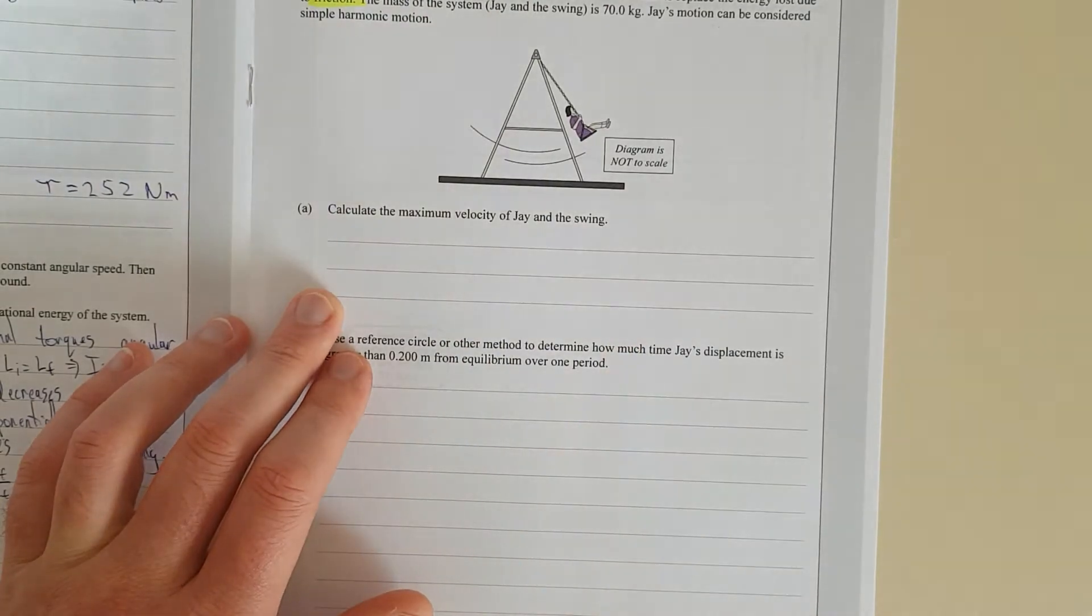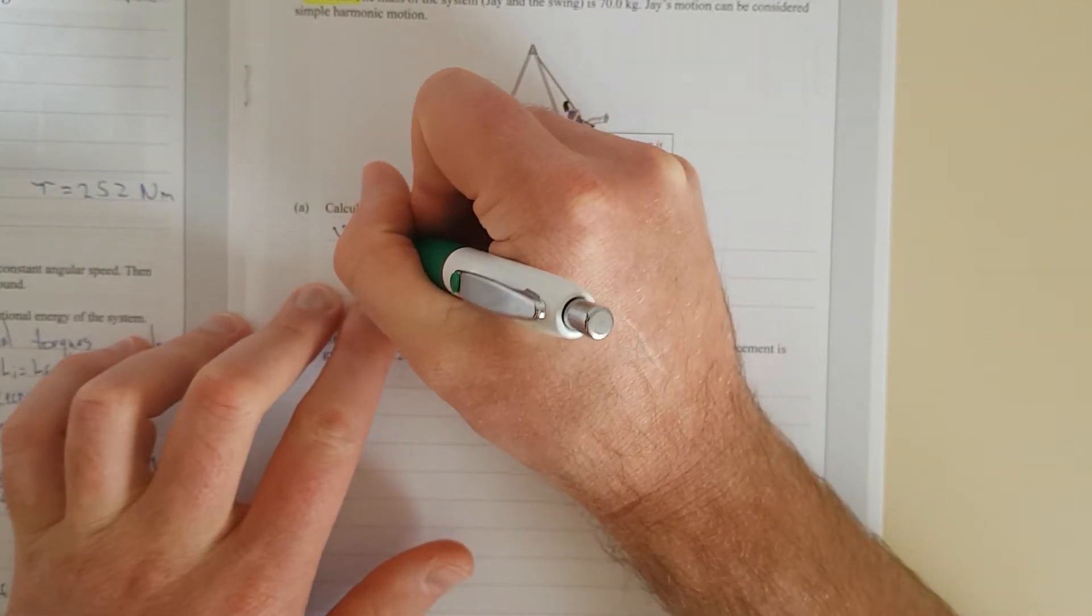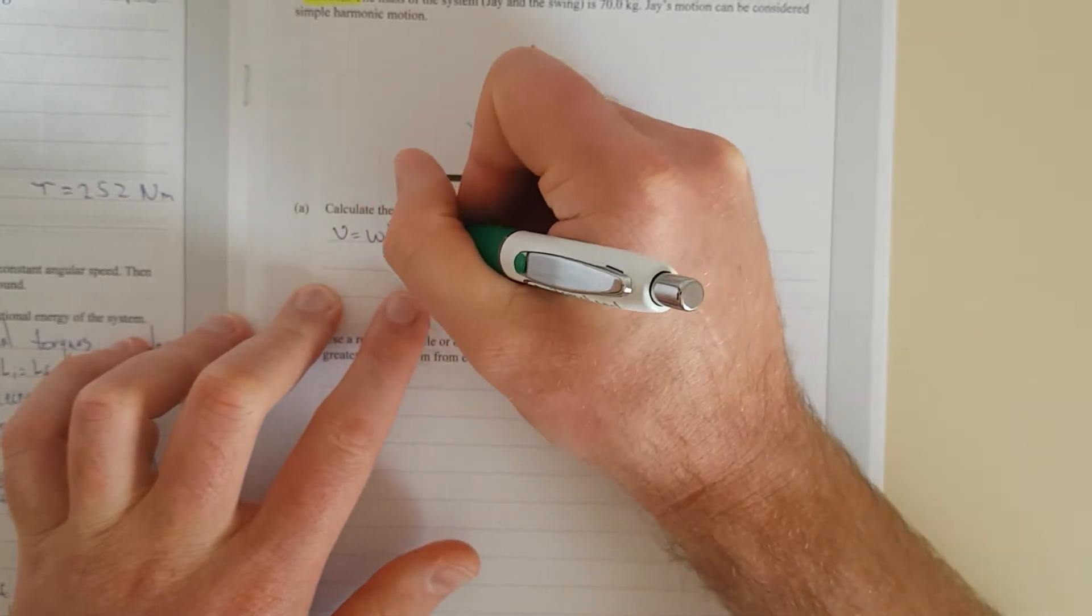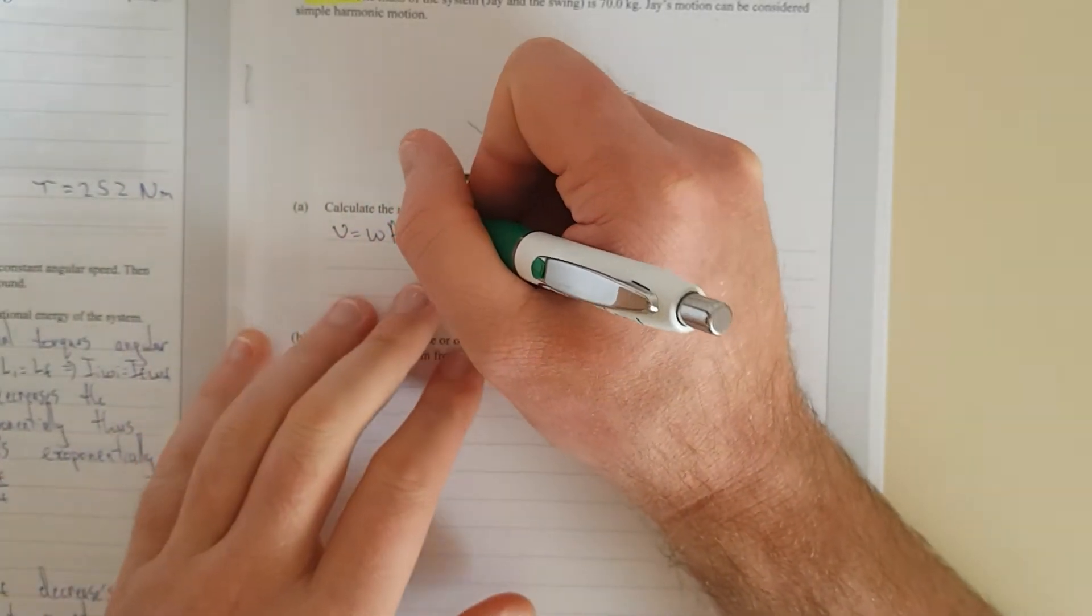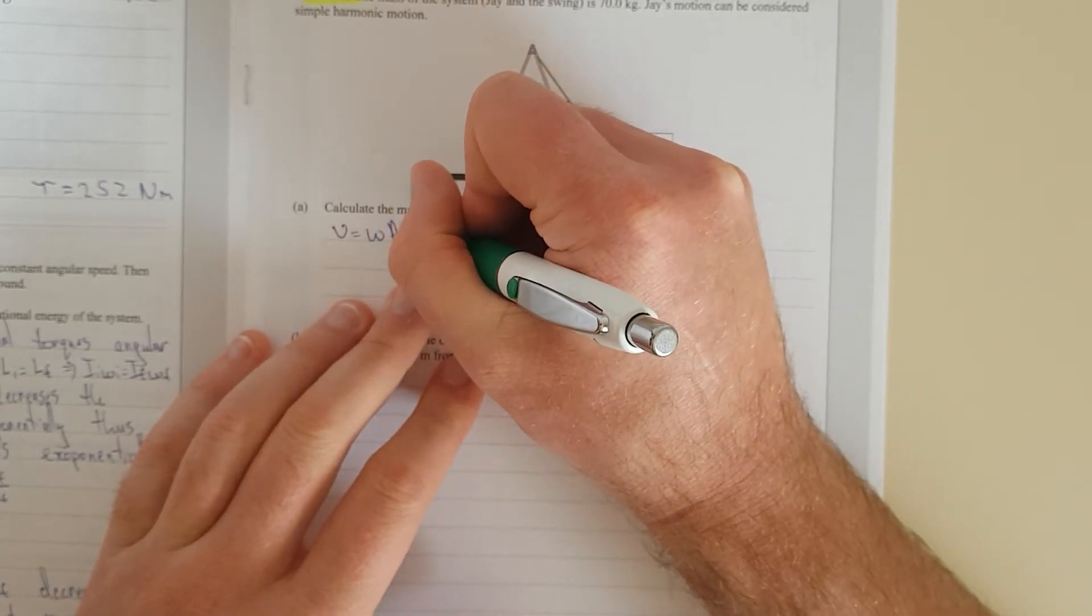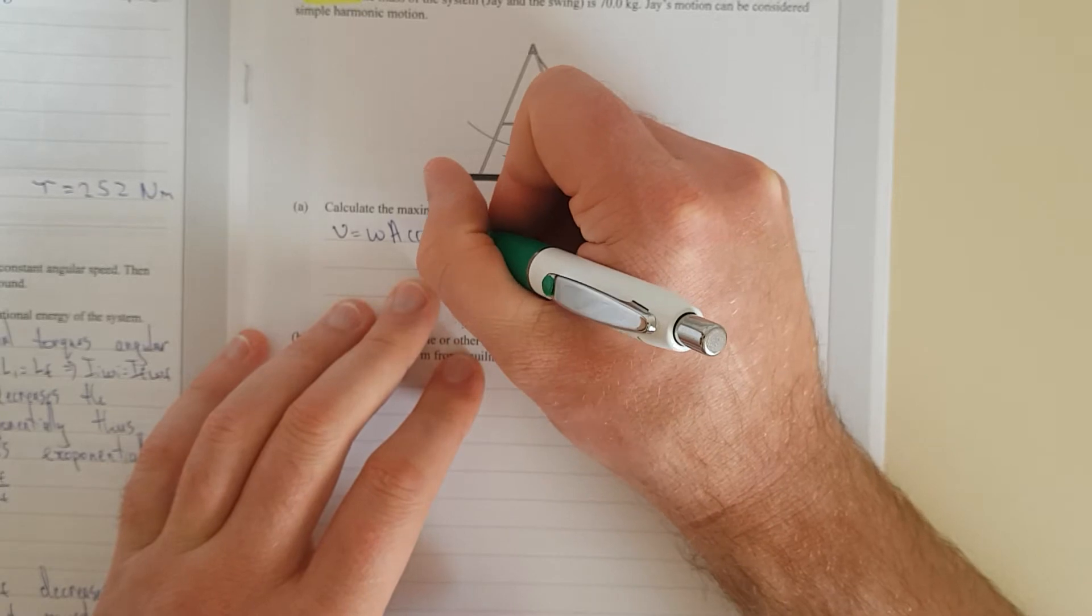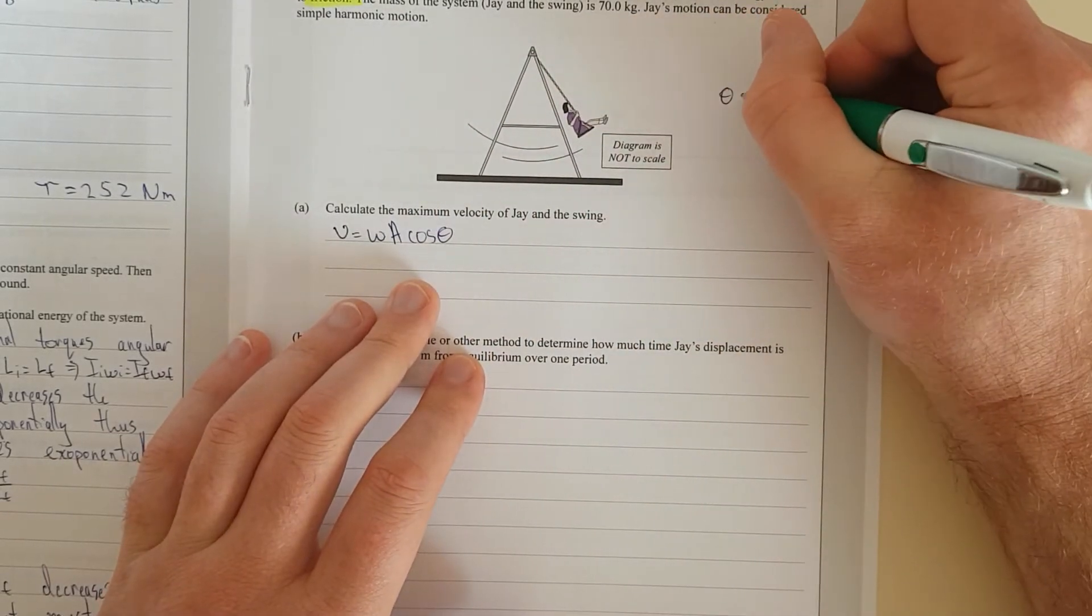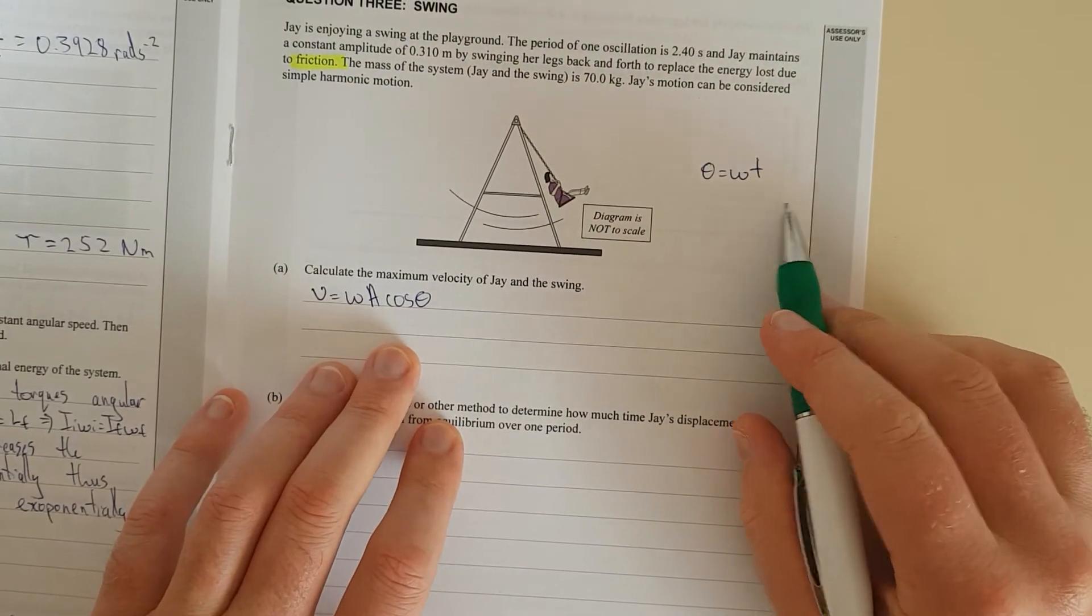In your formula sheet, you'll have V equals omega A, so the angular velocity times A. And then it can either be cos or sine, depending on where you started. But I'm just going to use cos. In the formula sheet, it's like angular velocity times time. But I'm going to put cos theta. And just remember that theta is equal to angular velocity times time.